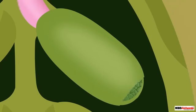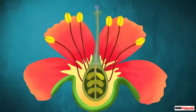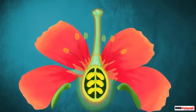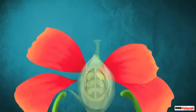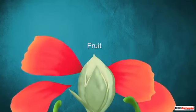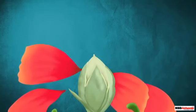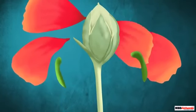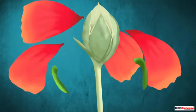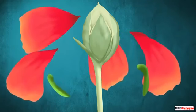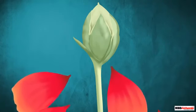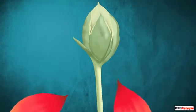The ovule develops a tough coat and changes into a seed. The ovary on the other hand ripens and forms a fruit around the seed. At this time, the other parts of the flower like the sepals and petals fall off.